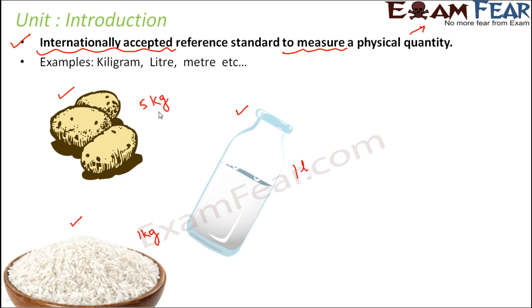So what is kg? Kilogram and liter — these are all units which are used to measure specific quantities. Liter is used to measure volume. Kilogram is used to measure mass. So there exist different units for different physical quantities.